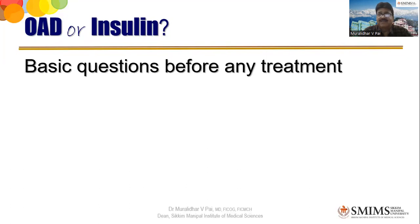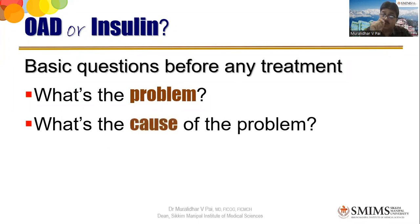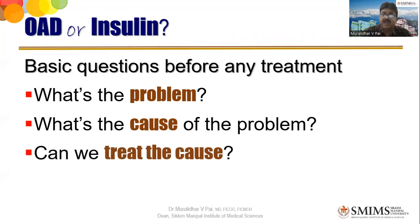Whenever you want to choose between surgery and medicine, the basic principle is: something which is structurally changed requires surgery; something which is functionally deranged requires medicine. In the topic of diabetes, the question comes whether to take injectables, OADs, insulin sensitizers, or direct insulin. The basic question before any treatment is: what is the problem? You need to understand what is the cause. Is it an infection, a derangement of chemicals in the body, a hormonal derangement? And then: can we treat that cause?